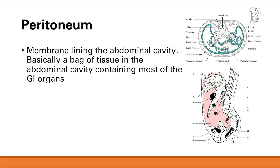Now a little bit of anatomy. The first thing I want to talk about is the peritoneum. This is a membrane that lines the abdominal cavity. I've put in two pictures for you — one's a cross-section — and it's all a membrane. I pretty much think of this as a bag of tissue. It's in the abdominal area, and it contains most of your GI organs.